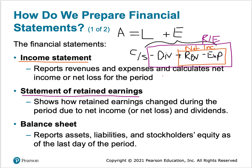We're going to have our beginning retained earnings, plus or minus our net income or loss, minus dividends, and that's going to give us our ending retained earnings.